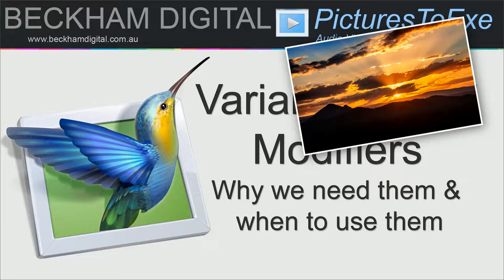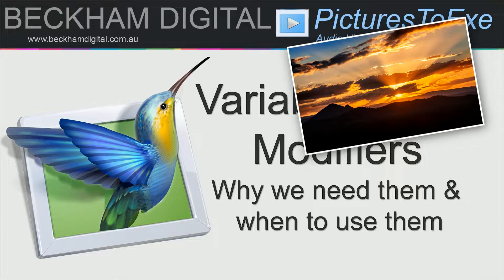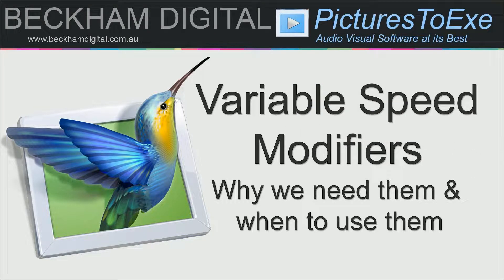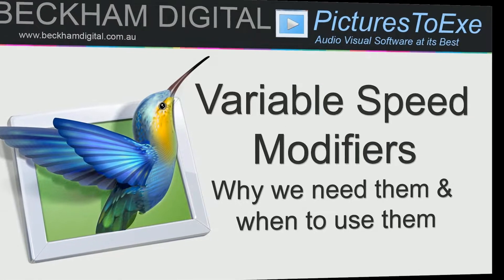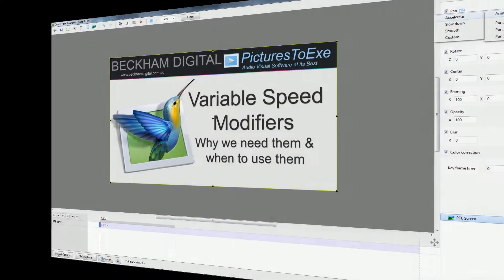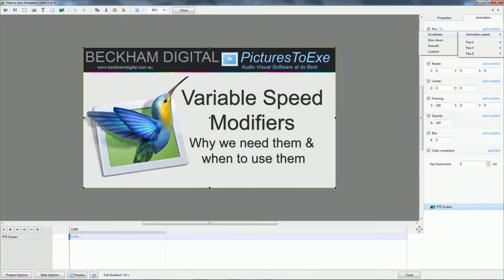The animation speed modifiers can be found in the objects and animations screen via Add Modifier > Animation Speed. And there we can see that we have Accelerate, Slow Down, and Smooth as our options.